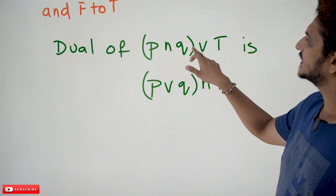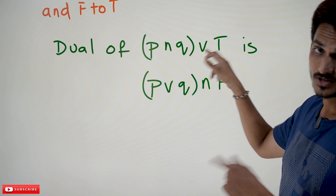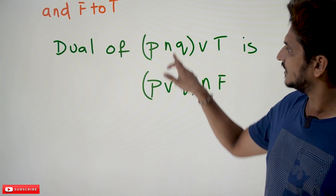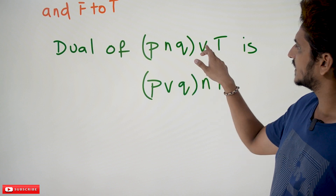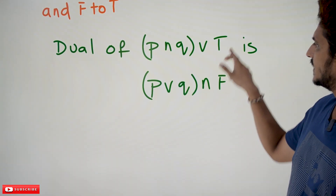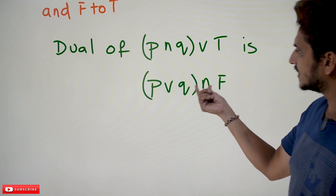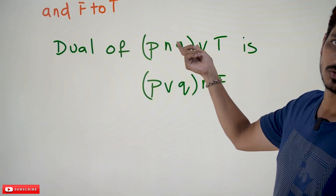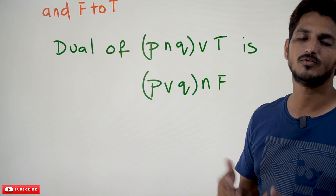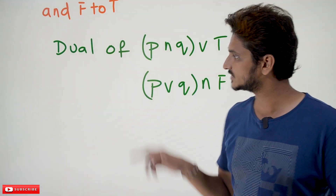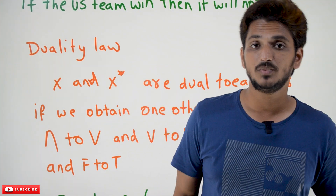Let's take an example: the dual of 'P conjunction Q disjunction true.' Whenever there is conjunction, write disjunction; whenever there is disjunction, write conjunction; whenever there is true, write false. This gives us the dual of that proposition. This is how we write the dual for a proposition.